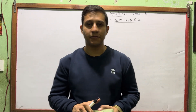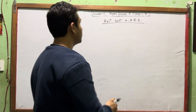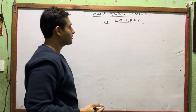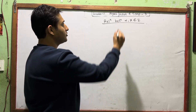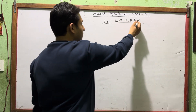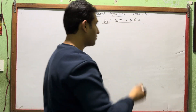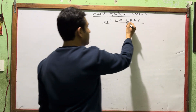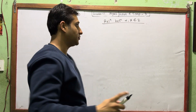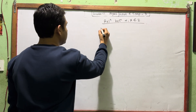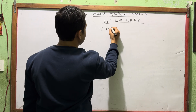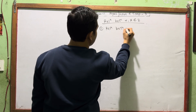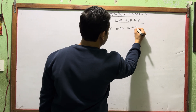Hello everyone, welcome to this class of grade 11 physics, temperature part 3. We are going to talk about alpha, beta and gamma. We are going to talk about the coefficient of linear expansion. We are going to talk about the relationship between alpha and beta.